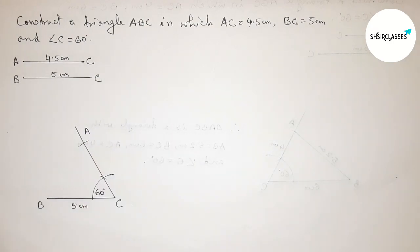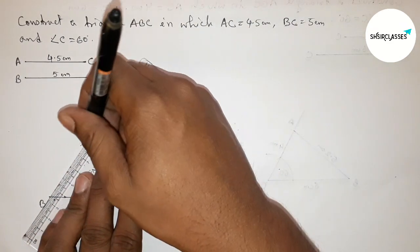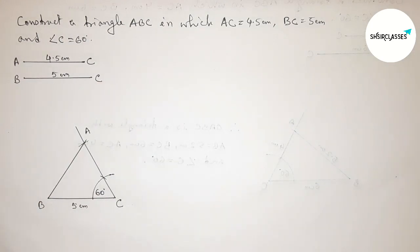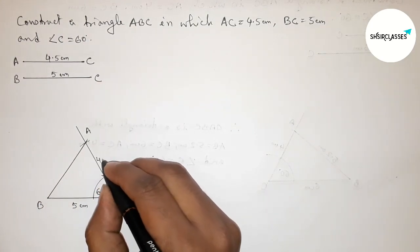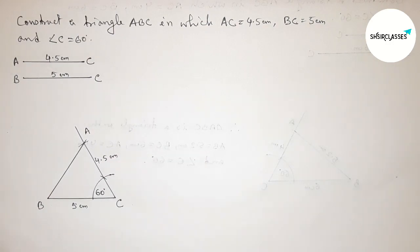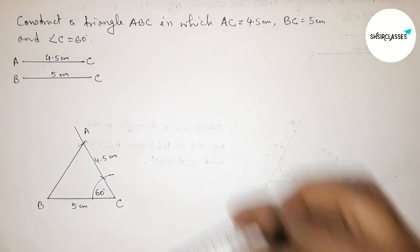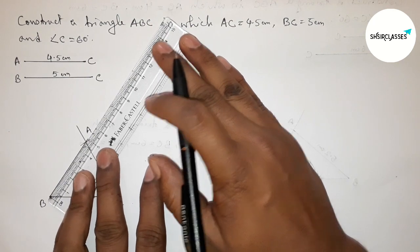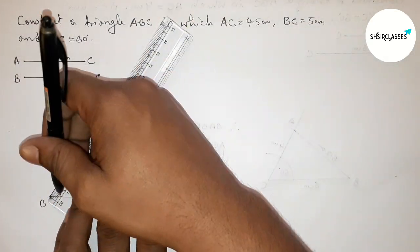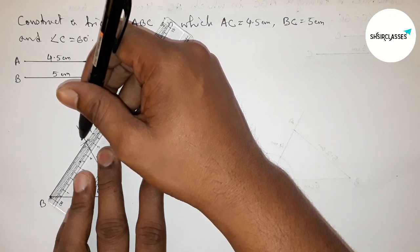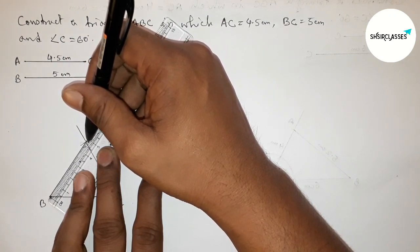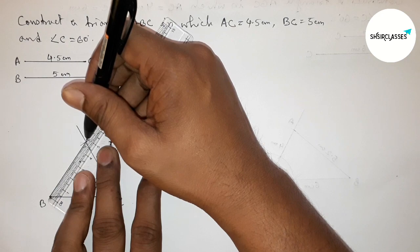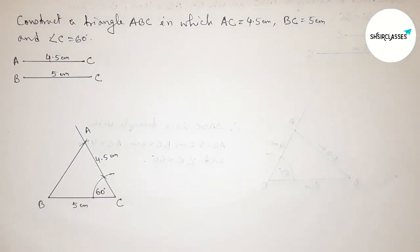Taking point A and joining AB. The length AC equals 4.5 centimeters. Now measuring the length of AB with the help of a scale — this is approximately 4.7 centimeters.